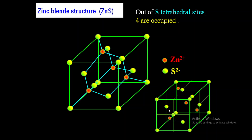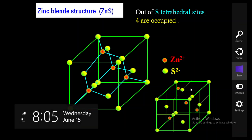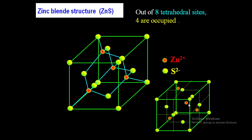There are 8 boxes total, and each box can be called a tetrahedral site. Out of these 8 boxes, only 4 contain a Zn²⁺ ion. For example, the first box contains a Zn²⁺ ion, the second box is empty, the third box is empty, and the fourth box contains a Zn²⁺ ion. Looking at the bottom boxes: the fifth box contains a Zn²⁺ ion, the sixth does not, the seventh (back box) does, and the eighth does not. So out of 8 tetrahedral sites, only 4 are occupied by Zn²⁺ ions.